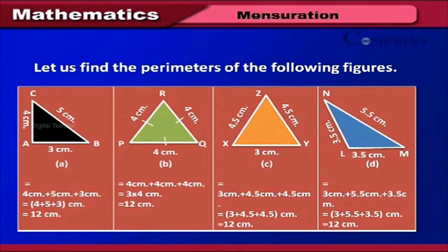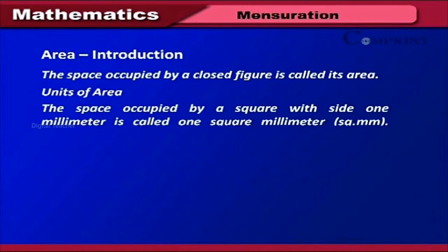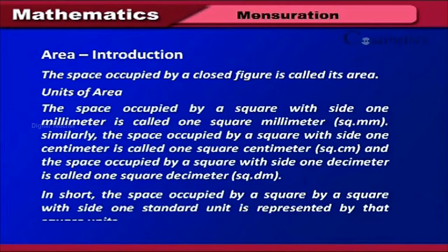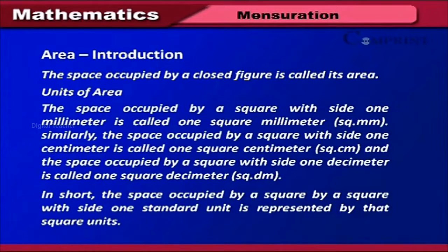Area Introduction. The space occupied by a closed figure is called its area. Units of area: the space occupied by a square with side 1 millimeter is called 1 square millimeter; with side 1 centimeter, it is 1 square centimeter; and with side 1 decimeter, it is 1 square decimeter. In general, the space occupied by a square with side 1 standard unit is represented by that square unit.